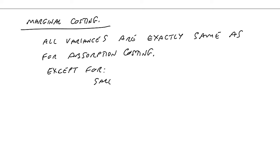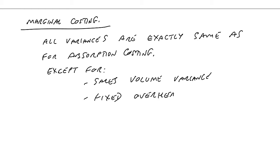The two exceptions are the sales volume variance and the fixed overhead variances. All the other variances are the same, because if you spend more money on materials, you make less profit — it doesn't matter which costing system you're using. If you spend more money on labour, you make less profit — it doesn't matter which costing system you're using. So all the other variances are exactly the same, and you must learn the rules.